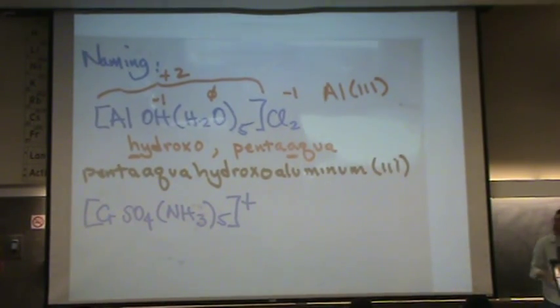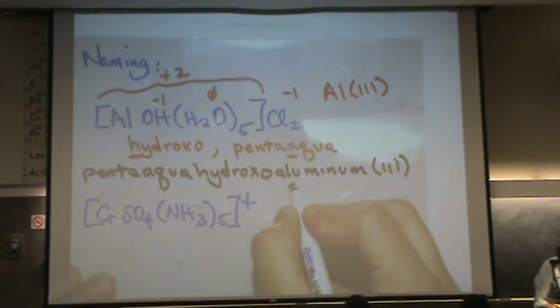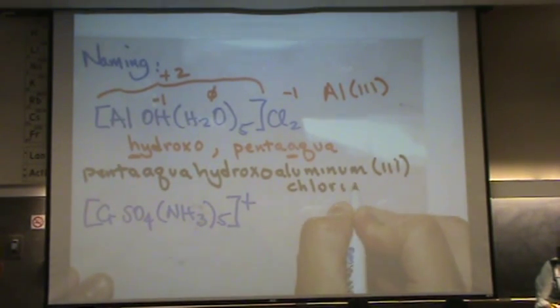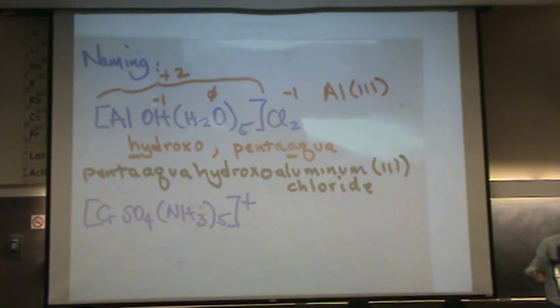And now we name the counter ion. Just like we'd say magnesium chloride, we're going to say blah blah blah chloride. So two names. Penta aqua hydroxyl aluminum three chloride.